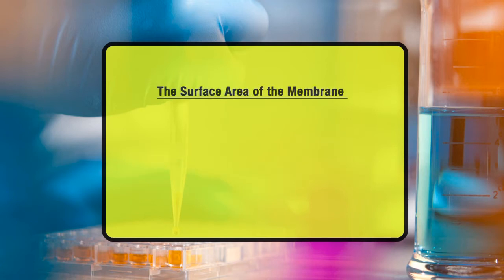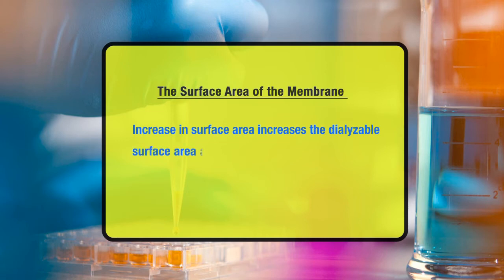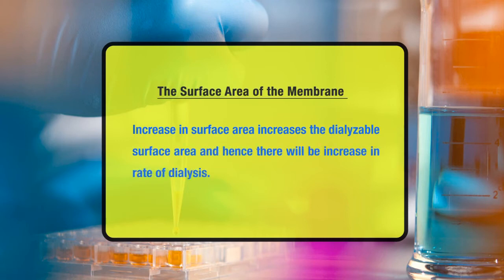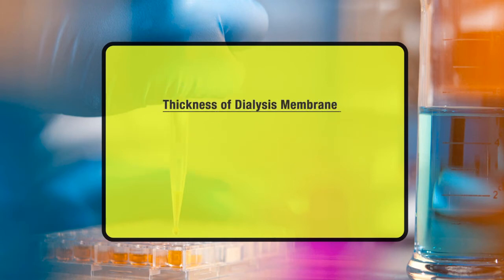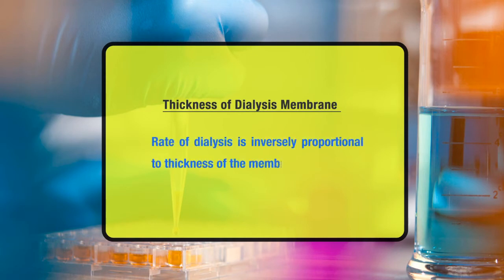Thirdly, the surface area of the membrane. Increase in surface area increases the dialyzable surface area and hence there will be an increase in the rate of dialysis. Another determinant is the thickness of the dialysis membrane. The rate of dialysis is inversely proportional to the thickness of the membrane.